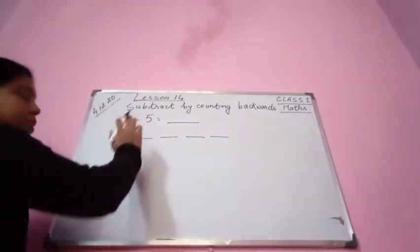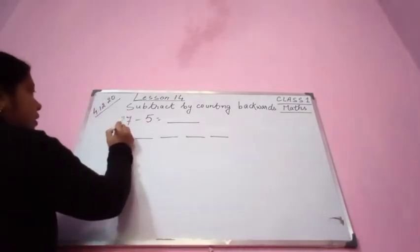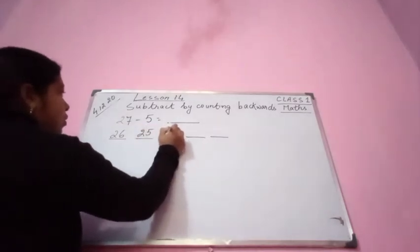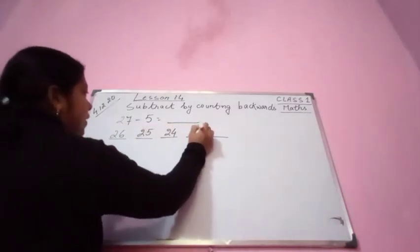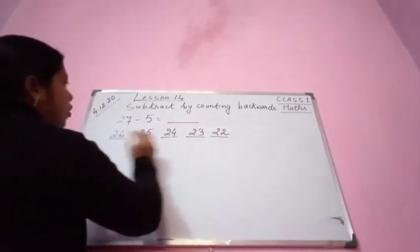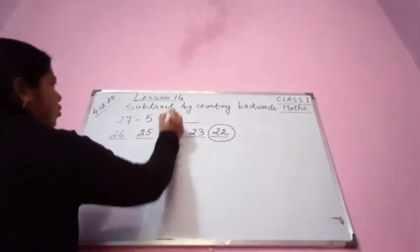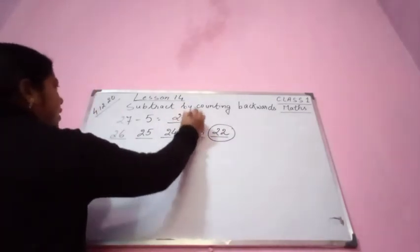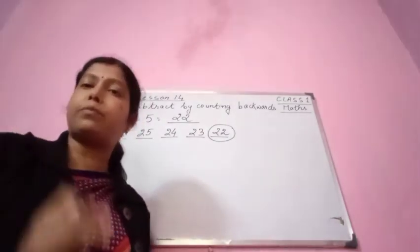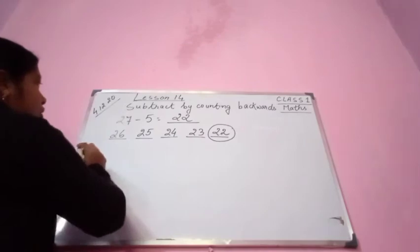5 places, because 27 minus 5 is given here. So before 27: 26, then 25, then 24, then 23, then 22. So what comes here? 22. The answer will be 22. To the last place you count — 5 places we are counting. So the answer is 22.